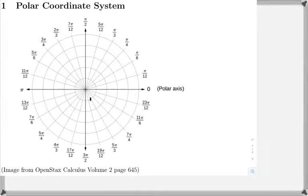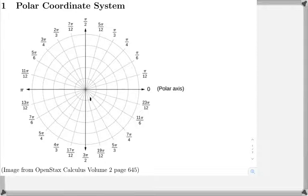This is the first of four videos on Section 3.4, which is getting familiar with the polar coordinate system. Here is a graphic from the OpenStax Calculus Volume 2 book, page 645. We have the polar coordinate system: the x-axis we call the polar axis, and pi over 2 is the vertical axis, the y-axis, which we might call a radial line. You can see the concentric circles labeled at distances of 1, 2, 3, 4, and 5.